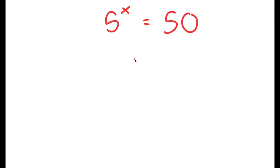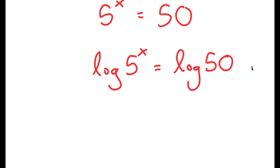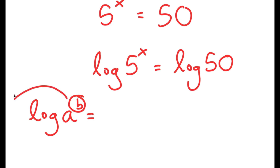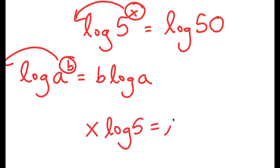We're going to use logarithms. I'll take the log of both sides, giving log(5^x) equals log 50. The reason is that logarithms have a special property: log(a^b) equals b times log a — the exponent moves to the front. So log(5^x) becomes x times log 5, giving x times log 5 equals log 50.